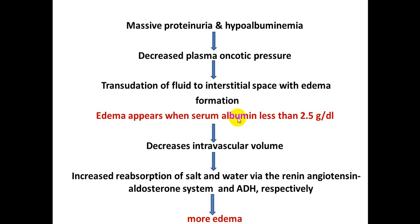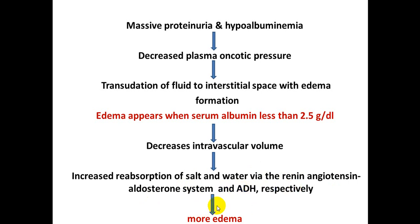Edema appears when serum albumin is less than 2.5 g per deciliter. The decreased intravascular volume leads to increased reabsorption of salt and water by the kidney through the renin-angiotensin-aldosterone system and antidiuretic hormone secretion, resulting in further edema formation.